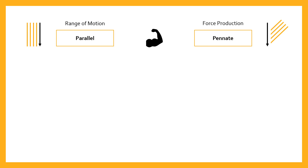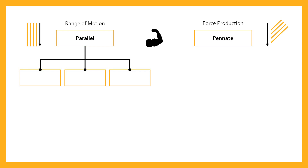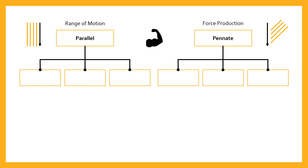There are three subcategories of parallel muscles and three of pennate muscles. The first type of parallel architecture is the strap muscle. Strap muscles are called that because they look like a strap, with fibers running parallel to the contraction direction. Under concentric contraction they can shorten up to about 40% of their resting length, providing a significant range of motion. A good example is the sartorius, the longest muscle in the human body.